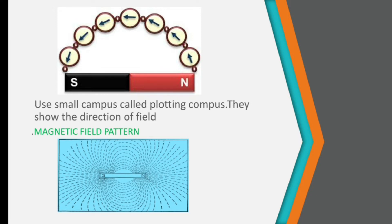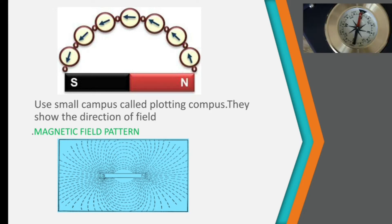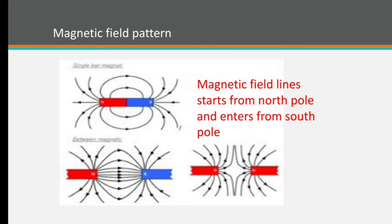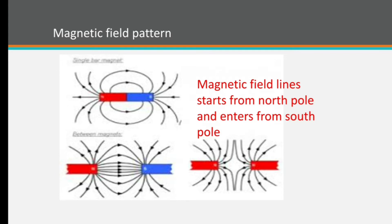Magnetic field lines start from north and enter through south. This is a magnetic compass through which we can know the magnetic field pattern. Now, looking at magnetic field patterns between same poles and different poles: in the first diagram, field lines for a bar magnet start from north and enter through south. The second diagram shows two different poles facing each other — field lines pass from north of one magnet to south of the other. In the third picture, when same poles face each other, a blank space is created at the center, indicating repulsion.